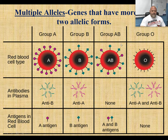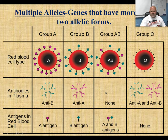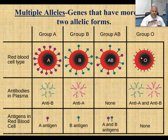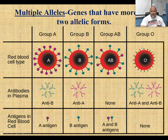People who have type AB blood have both antigens on the surface of their red blood cells and they won't produce antibodies for either one. People with type O blood don't have any of those antigens on the surface of their red blood cells and have the potential to make type A and B antibodies.